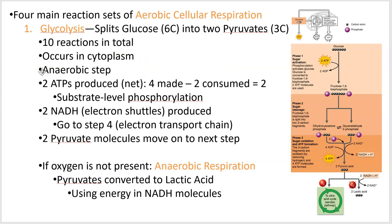You just need to know that the end product of glycolysis is two molecules of pyruvate, that it occurs in the cytoplasm, and that it is an anaerobic step — it doesn't require oxygen. The only step that requires oxygen is the last step. Out of glycolysis we get two ATPs net — we actually made four total but spent two, so four minus two is two.